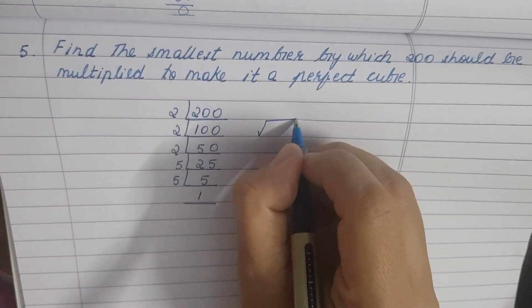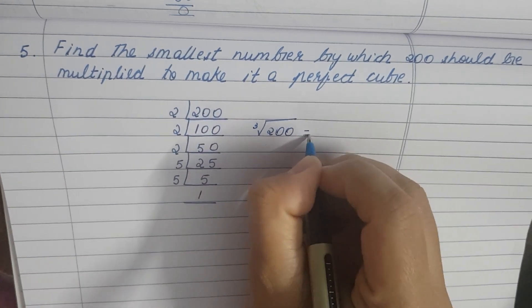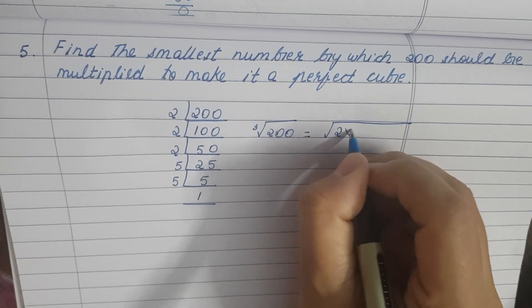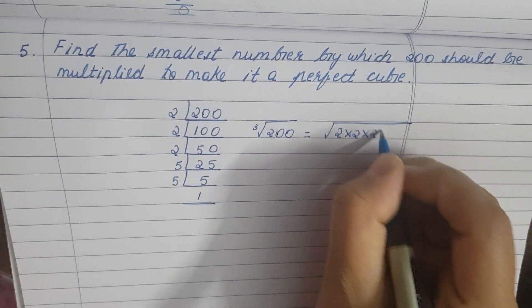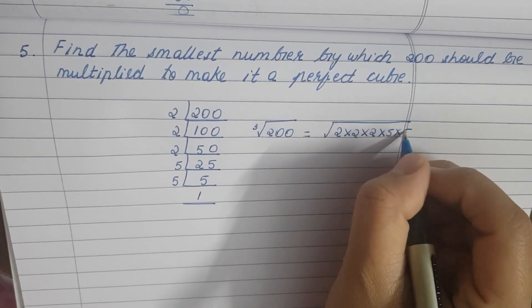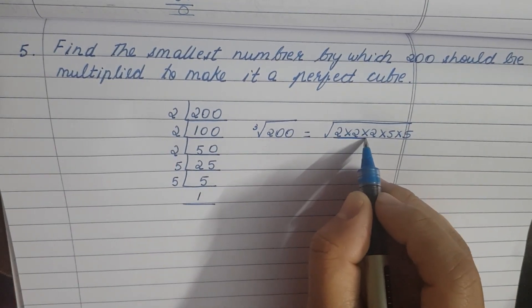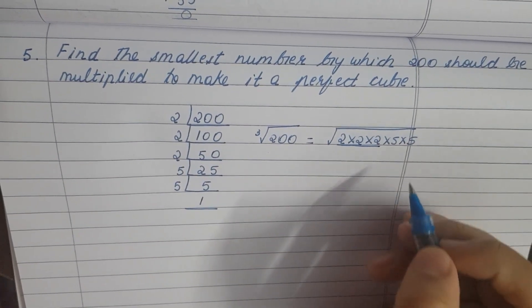Cube root of 200 is equal to cube root of 2 into 2 into 2 into 5 into 5. Now this triplet is one pair.